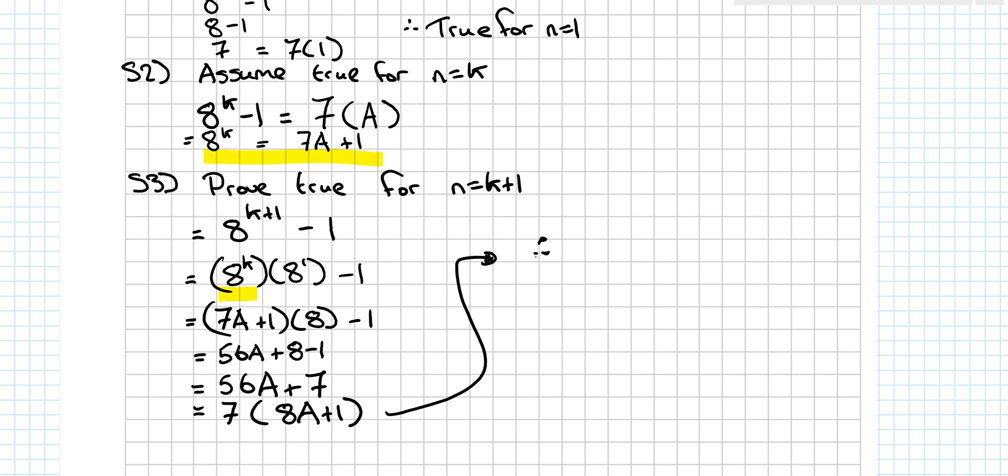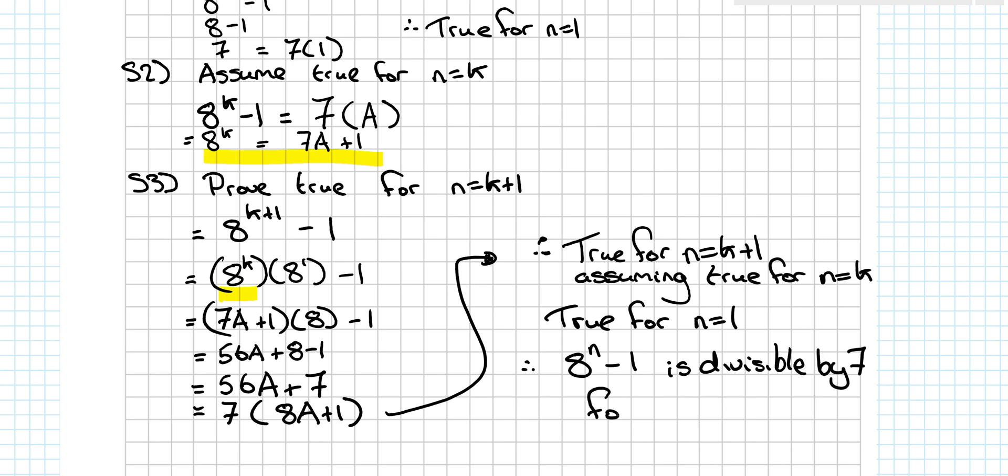As I can factorize out 7 from this, it must be true. So therefore, it must be divisible by 7. So therefore, true for n equals k plus 1, assuming true for n equals k. We also know it's true for n equals 1. Therefore, 8^n minus 1 is divisible by 7 for all n, elements of N.